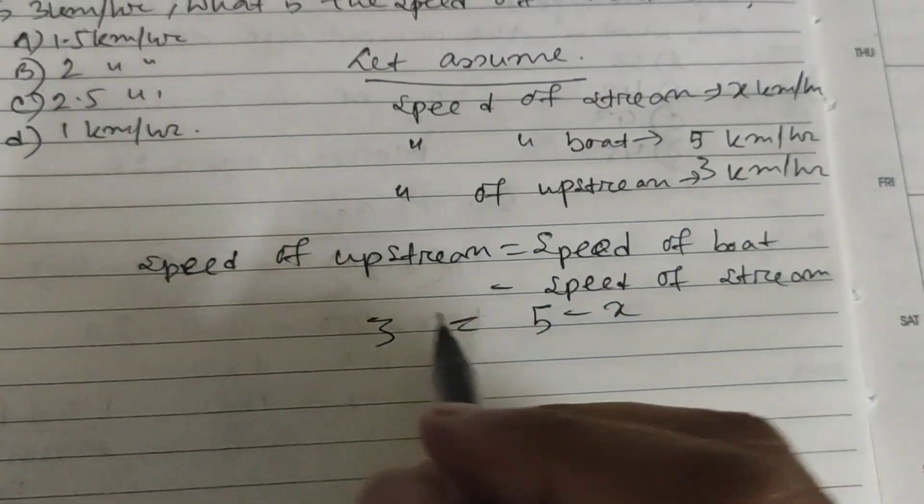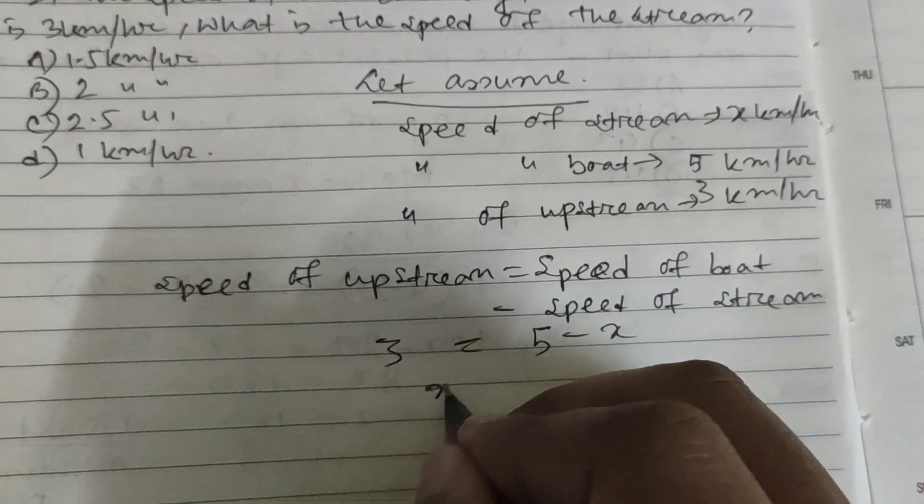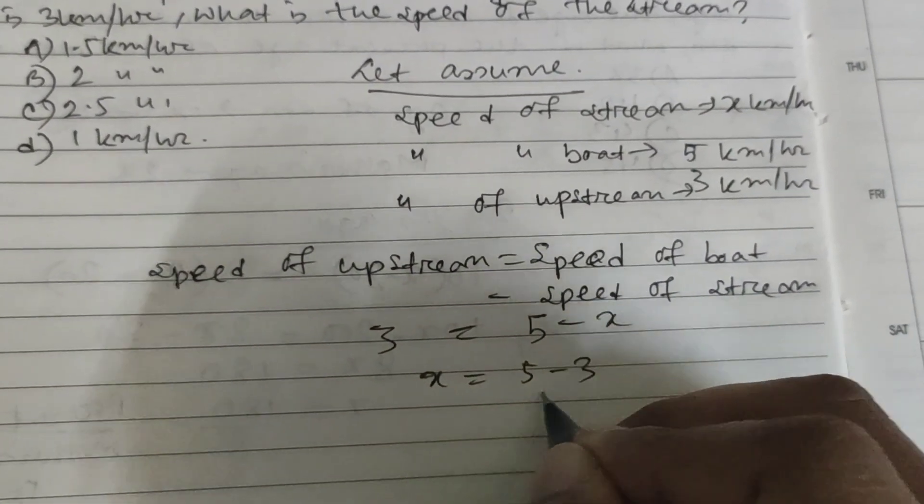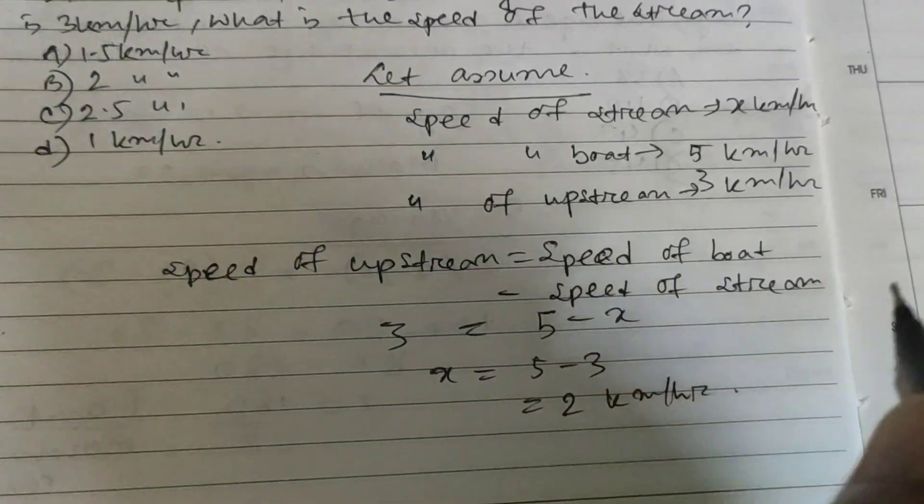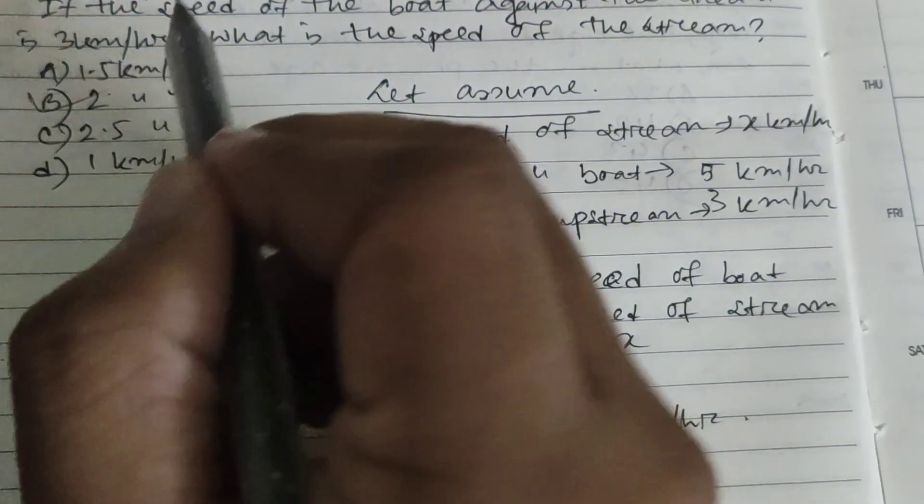So x equals 5 minus 3, which is nothing but 2 kilometer per hour. B is your right choice.